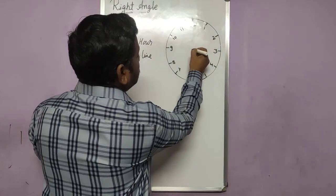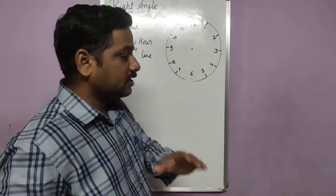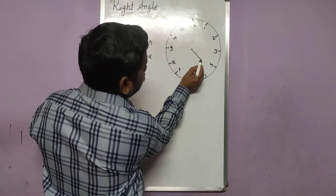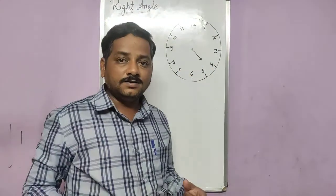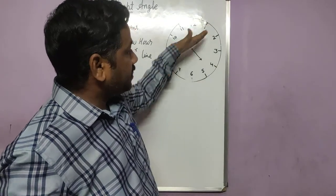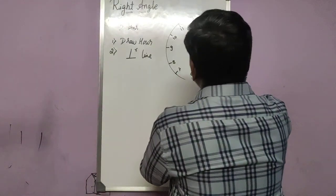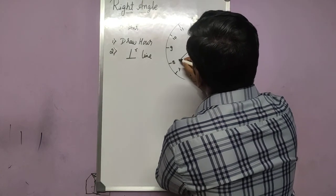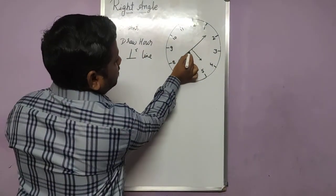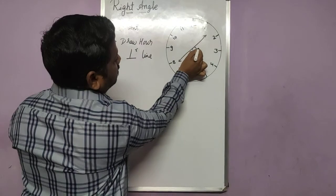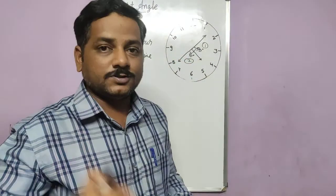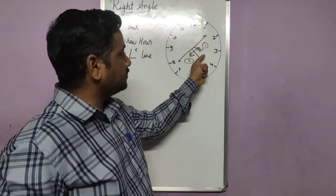First, according to this method, draw the hour hand. They clearly mention it is between 4 and 5, so the hour hand lies between 4 and 5. Now for the minute hand, draw a perpendicular line to the hour hand — that is the second step. Drawing the perpendicular gives us two angles, two possibilities. Let's call this the first possibility and this the second possibility.